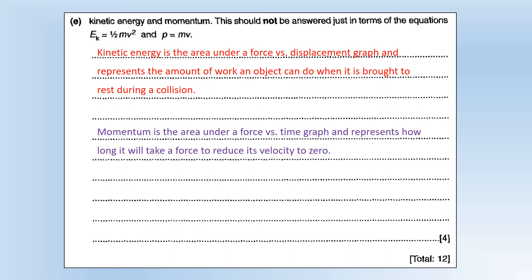Momentum is the area under a force versus time graph, and that represents how long it will take a force to reduce an object's velocity to zero. So if you have two objects and one has more momentum, the same force will take longer to stop the object with more momentum.